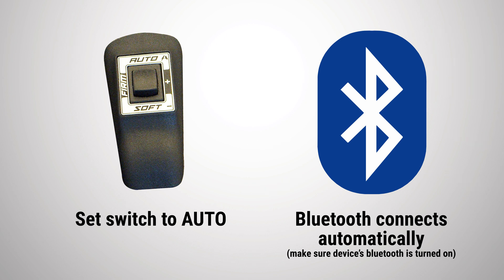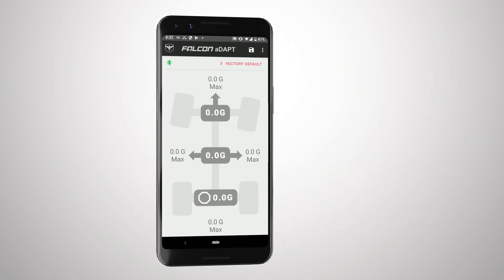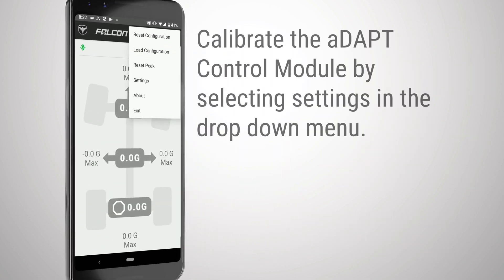Bluetooth pairing occurs automatically, just make sure Bluetooth is active on your device. If you are connecting the app to the ADAPT control module for the first time, you will need to calibrate it.